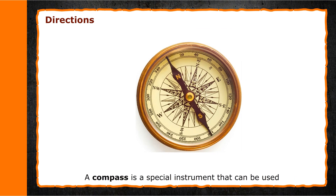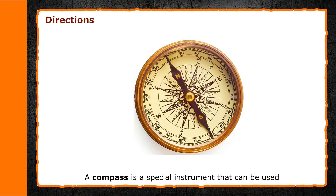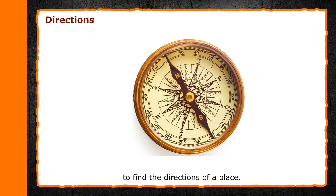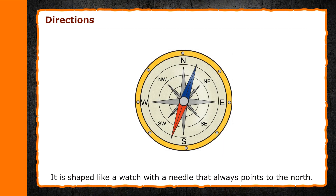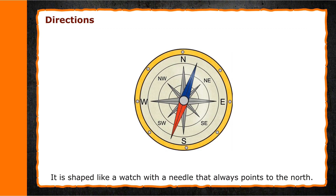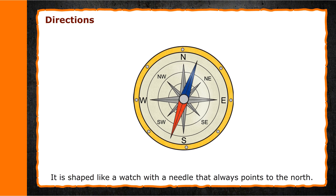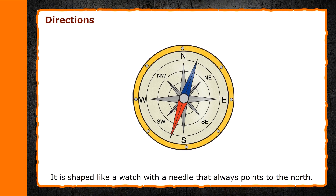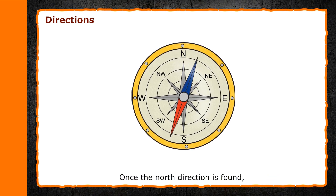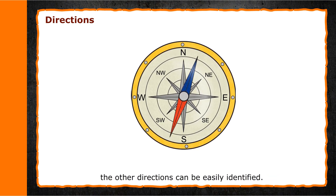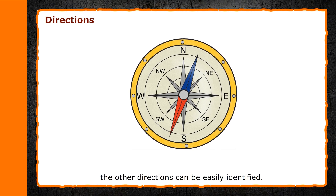A compass is a special instrument that can be used to find the directions of a place. It is shaped like a watch with a needle that always points to the north. Once the north direction is found, the other directions can be easily identified.